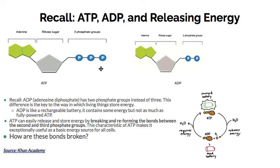Remember the second and third phosphate group — that bond broken is what releases a lot of energy. And then for this question, how are these bonds broken? Well, if you remember from Unit 2, that was through ATP hydrolysis. So that process, ATP hydrolysis, was what broke those bonds and released a lot of energy.